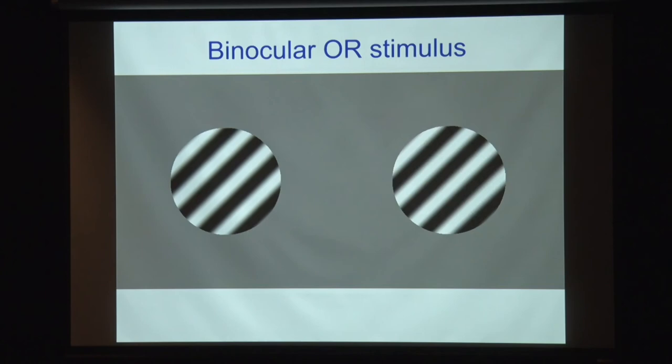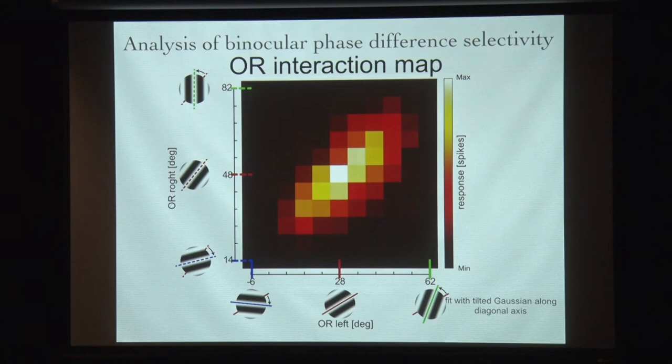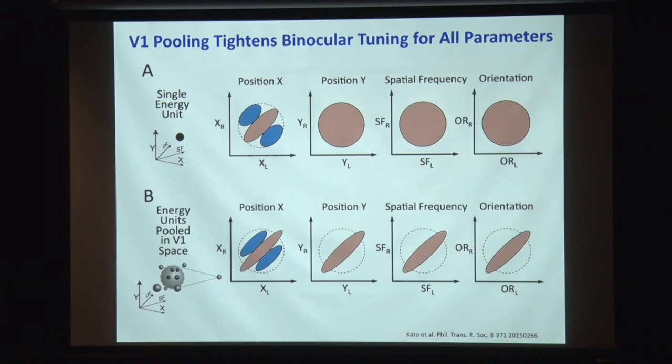The same thing happens for orientation, but for the sake of time I'll skip those. The summary of the first section is that a single energy unit gives really broad, circular binocular tuning for all parameters: X position, Y position, left-right spatial frequency, and left-right orientation. But if you consider pooling in V1 space, all of these get tightened — the matching requirement for the left and right parameters is tightened.